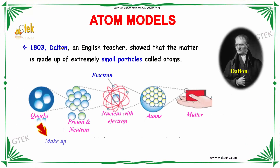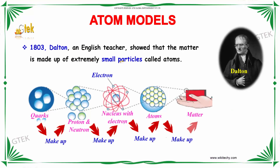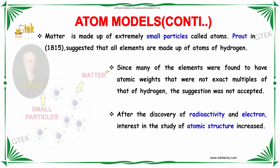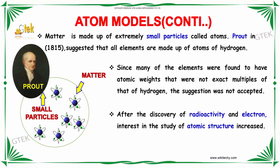In 1803, Dalton, an English teacher, showed that matter is made up of extremely small particles called atoms. The quarks, which are nothing but the proton and neutron, make up the nucleus in the center, and this forms an atom, which forms the exact matter. And this is nothing but your electrons.